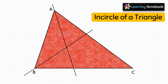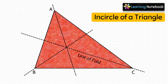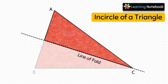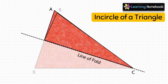In the next step, fold this red triangle along the line passing through vertex C such that side BC falls over side AC. Then make a crease and unfold the triangle.